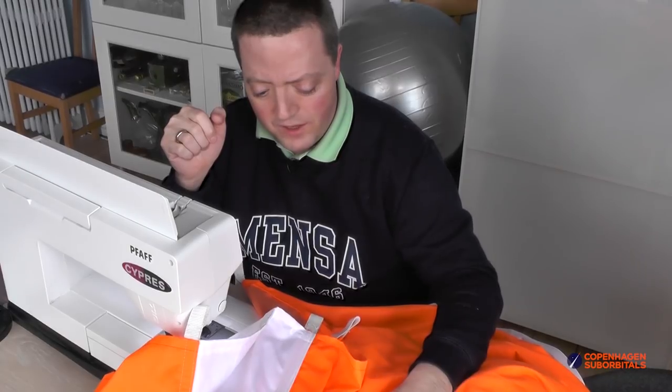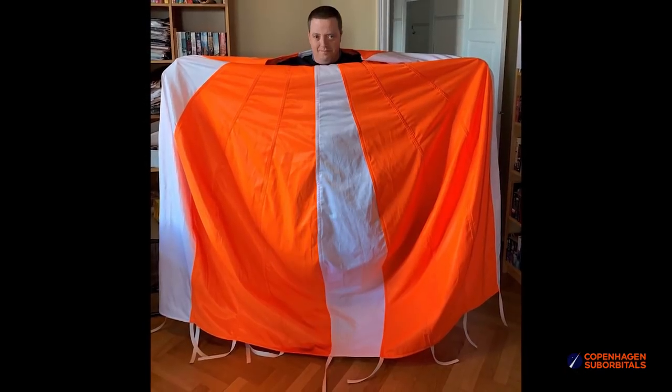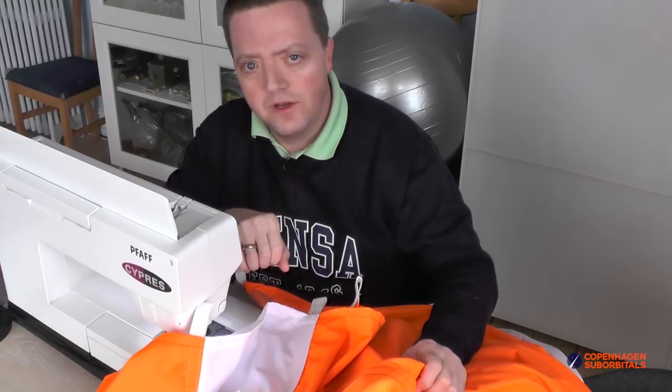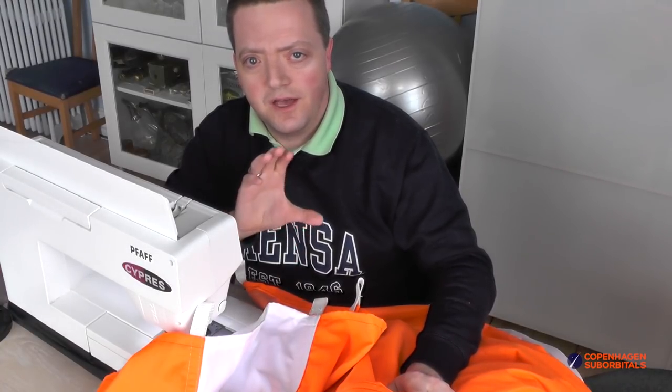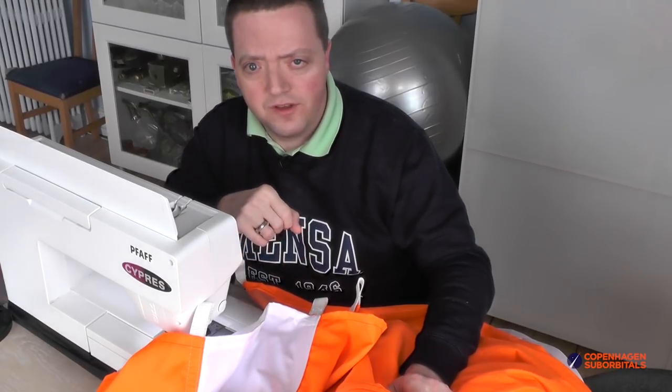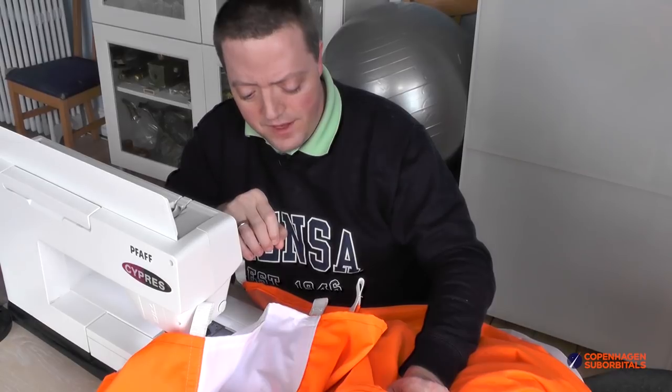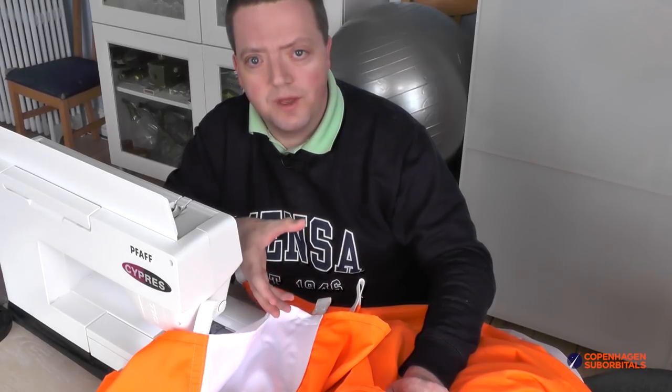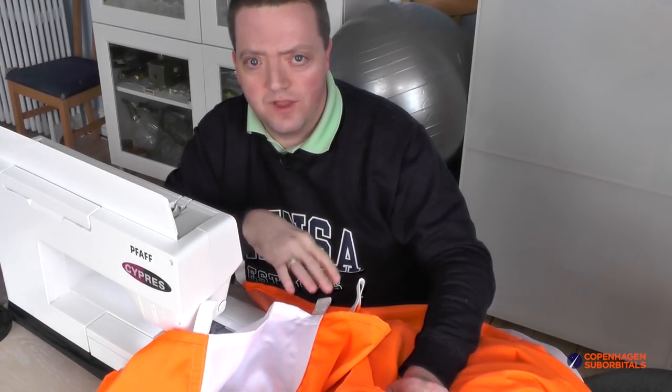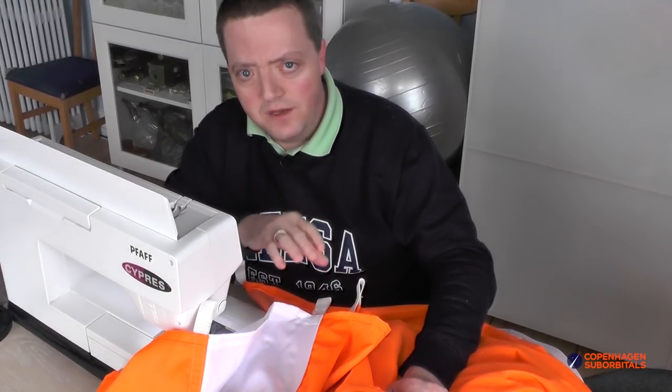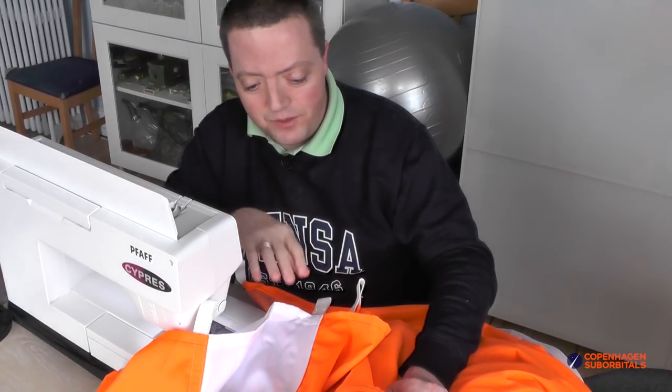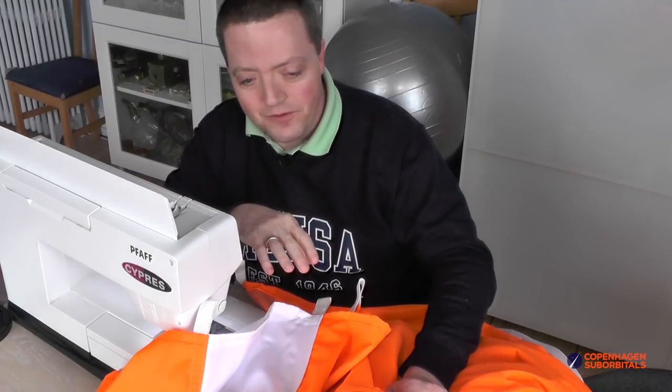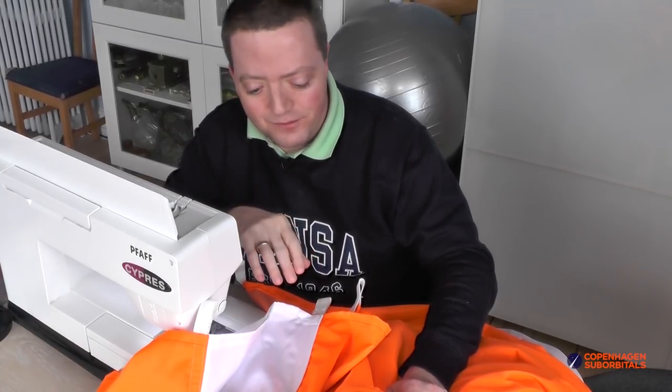So now we are trying to make the first hopefully full size drogue parachute here. And the idea is, as it looks now, that we want three of these to be deployed at some point during the descent of the booster. And then basically like with the Balut, we want those to deploy the main parachutes for the booster when it's time for that one to land. And hopefully that would mean that we will get the first ever European reusable booster if we are successful in doing this.